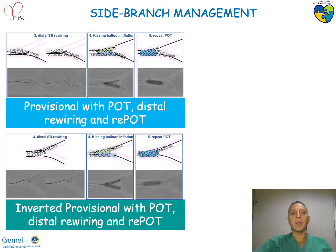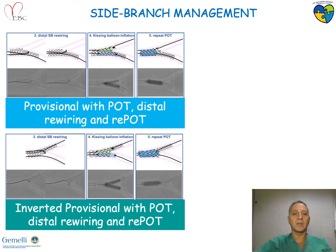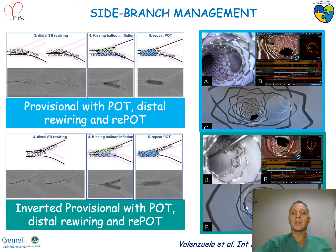This is a bench test. Looking at clinical practice, we know that bifurcations can be treated both by implanting the stent in the main vessel — this is provisional POT, requiring an EPOT — but also sometimes by inverted provisional, by implanting the stent from the main vessel towards the side branch. This is the fantastic adaptation of the Onyx stent documented in the visible art.